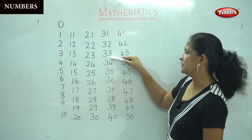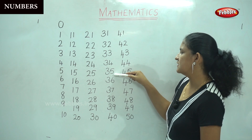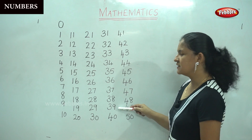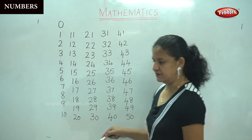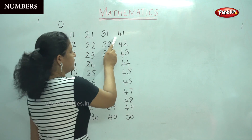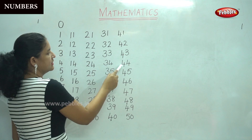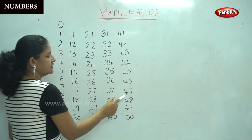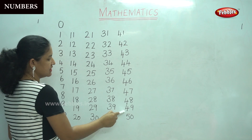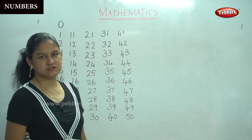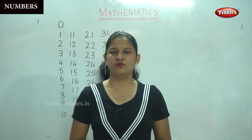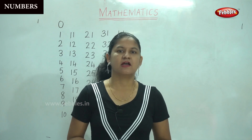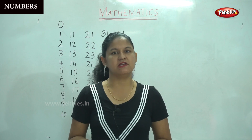32, 33, 34, 35, 36, 37, 38, 39, 40, 41, 42, 43, 44, 45, 46, 47, 48, 49, 50. So I hope you can identify the number as well as write it and write the number names.